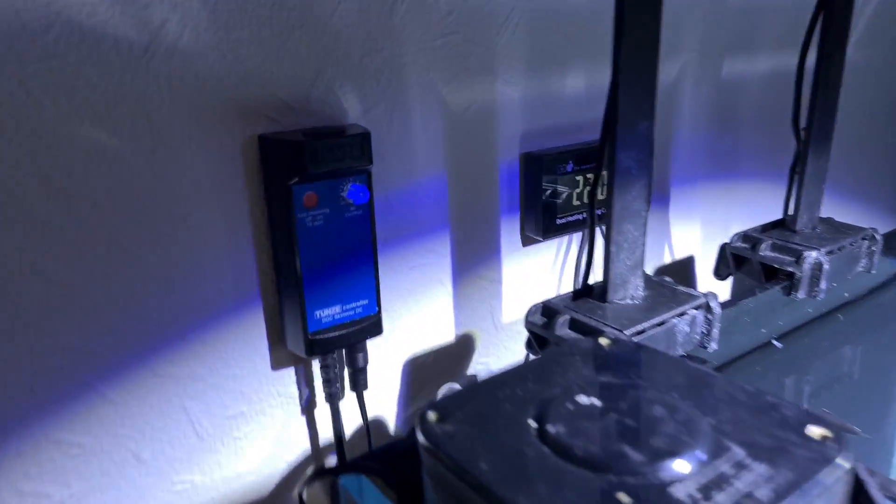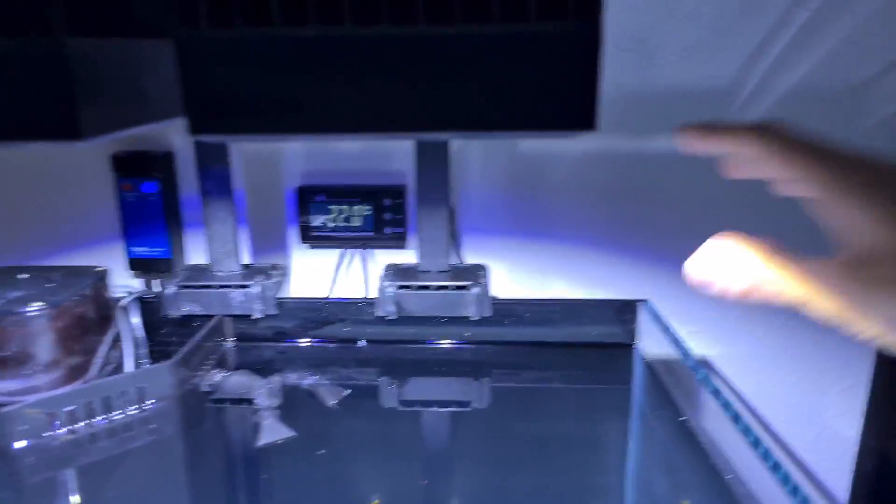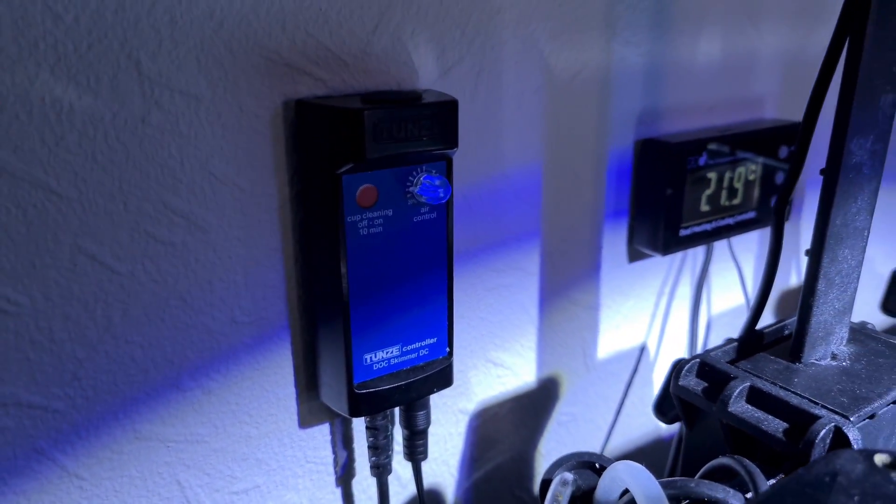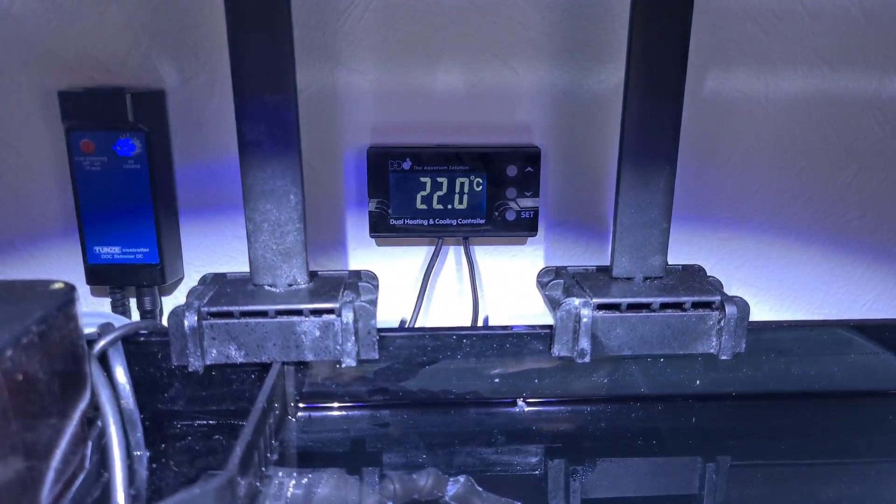I've also got my controllers mounted up on the wall, I've only got two at the moment, the third one will probably go over here, which will be the wave pump. But this is the skimmer, Tunze 9004, and then we've got the temp controller in there.